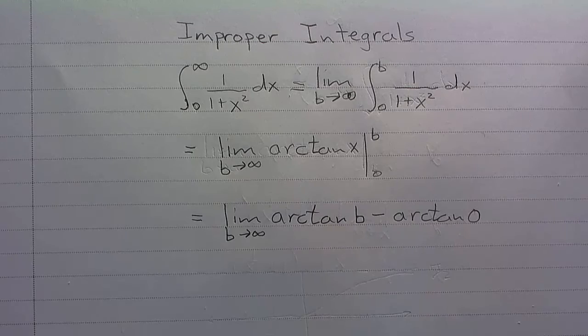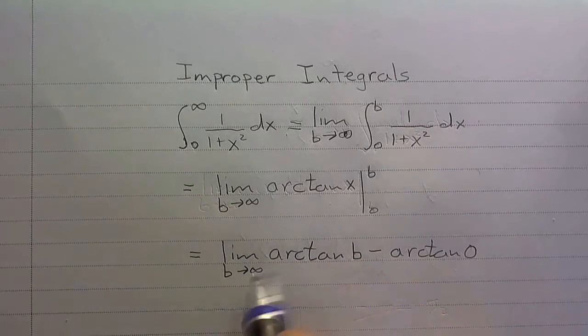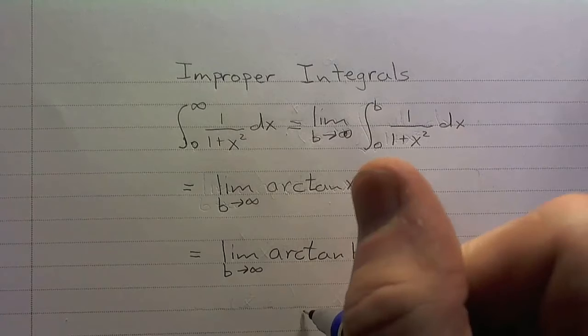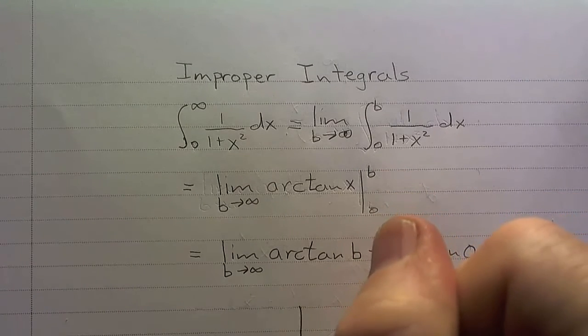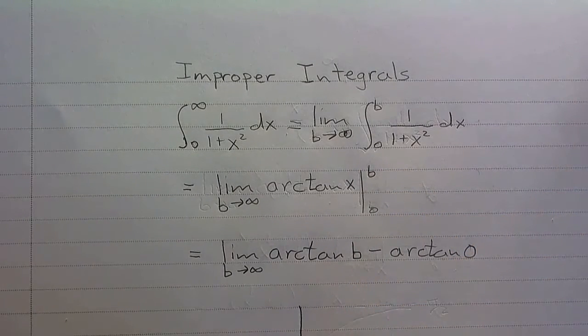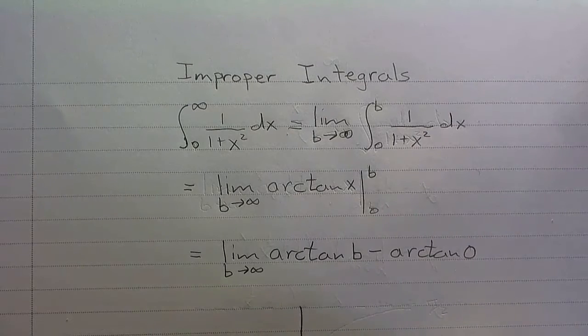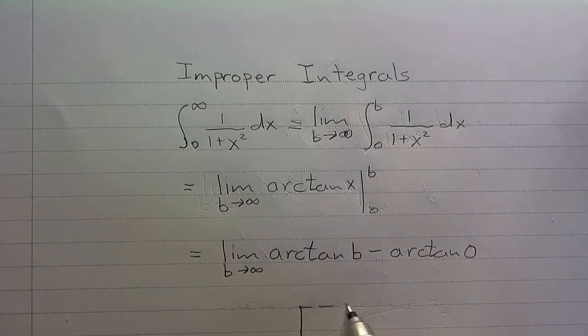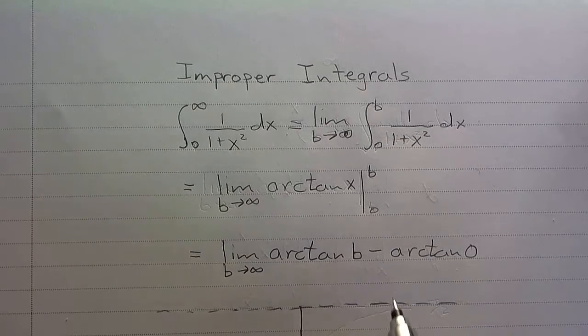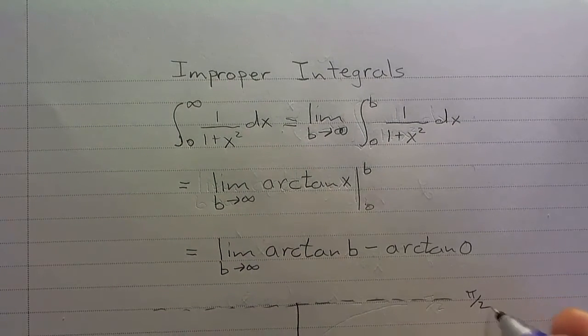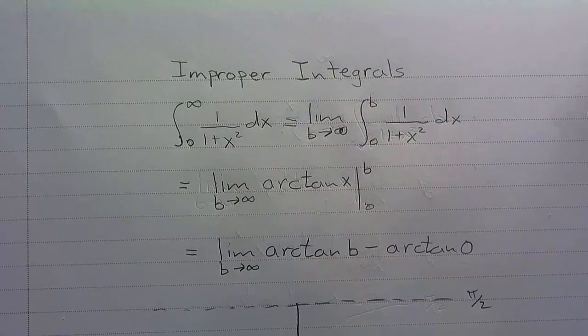Okay, so now we want to see if we can figure out what these values are. Well, recall what the graph of arctan looks like. Remember that arctan has horizontal asymptotes at pi over 2 and at negative pi over 2.